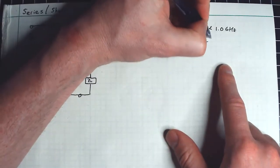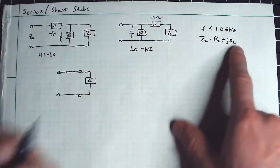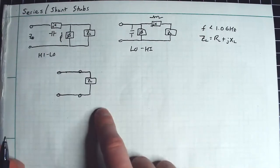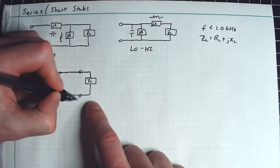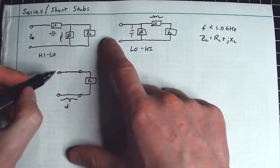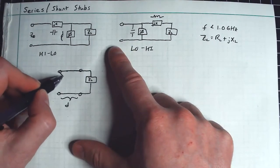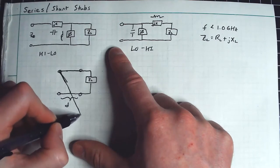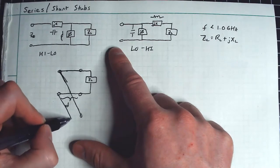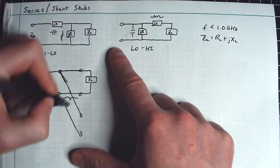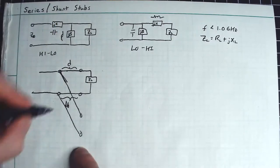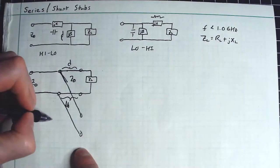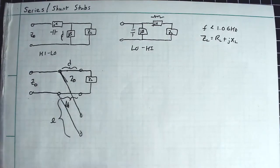So just a reminder, ZL is going to be R sub L plus J X sub L. So there's some load resistance and load reactance in this little load impedance here. And when you do stub matching, the first thing you have is some length of transmission line. I'm going to give this a length D. And after that, you have what's called a stub. It might look something like this. So let's see if I can draw this. So I'm going to go down like so here. So I'm going over my D like that.